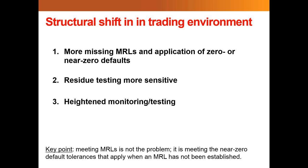We're now seeing heightened monitoring and testing. There are more and more countries around the world moving toward their own food safety modernization programs, and it seems reasonable to expect that a component of those modernization efforts will be heightened monitoring and testing. Meeting MRLs is not the problem — it's meeting the near-zero default tolerances that could apply when an MRL has not been established in the importing country. Standard lab equipment can now identify over 260 different residues per crop at well below one part per billion, depending on the matrix.